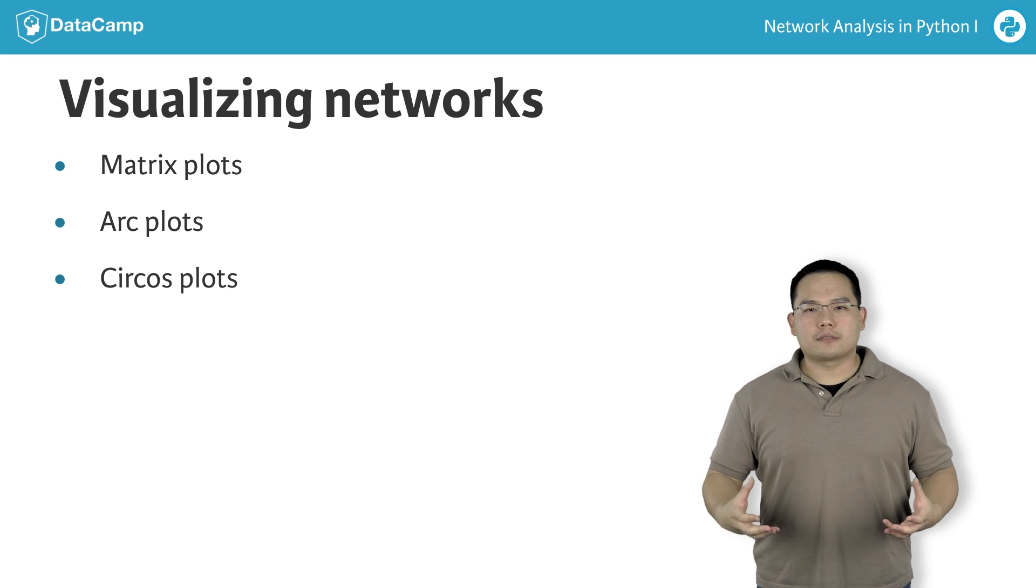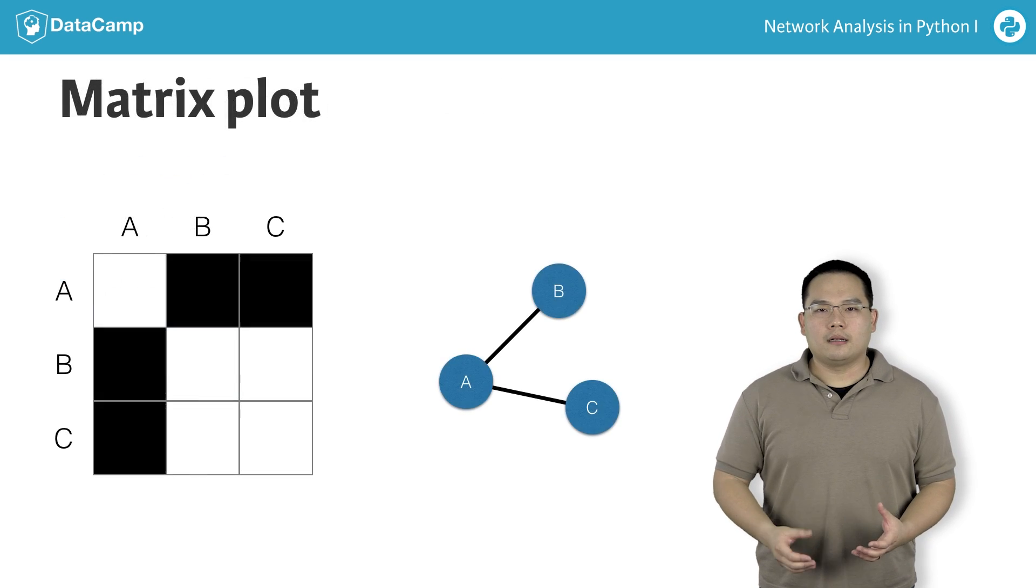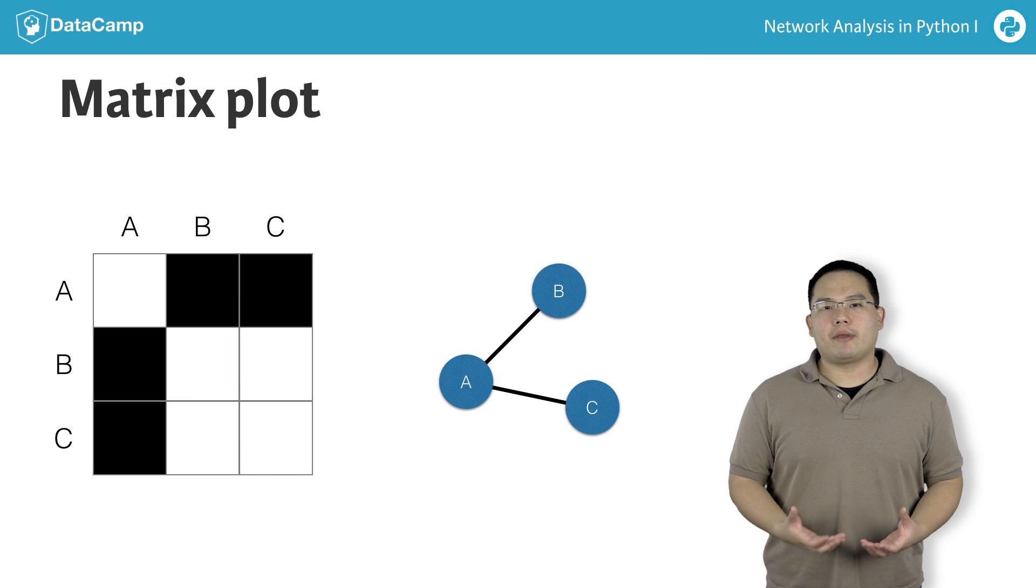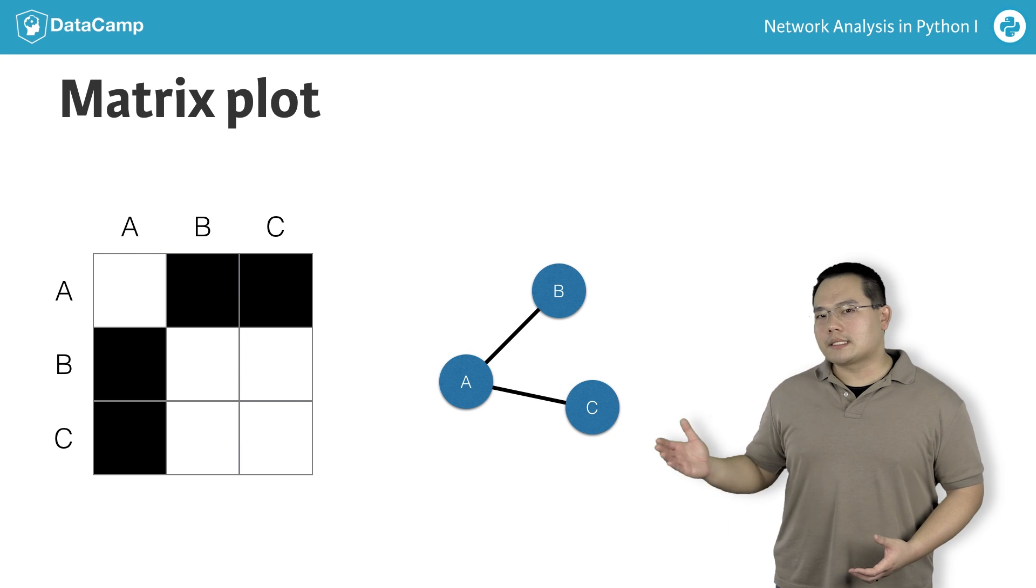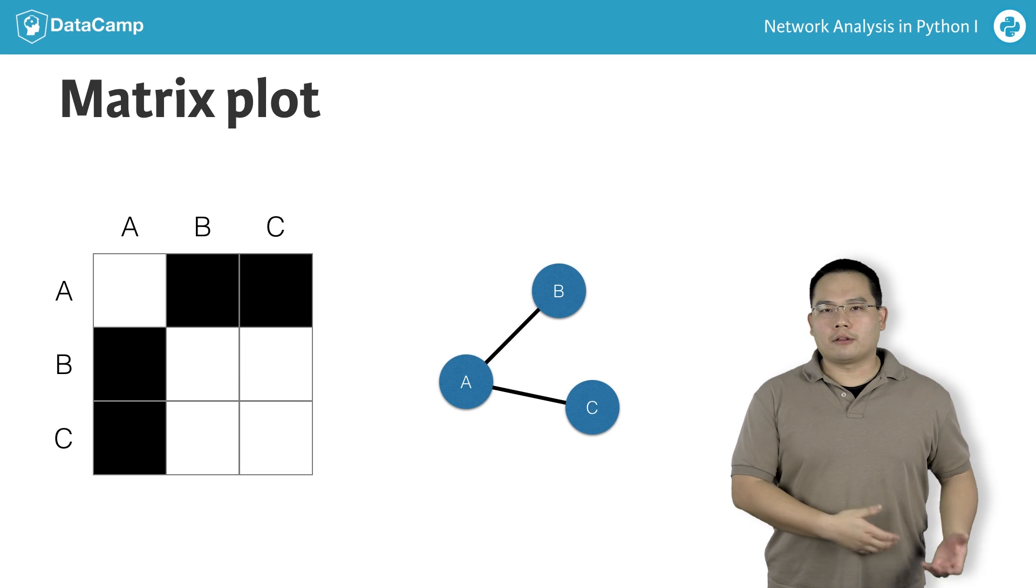Let's start first with a matrix plot. In a matrix plot, nodes are the rows and columns of a matrix, and cells are filled in according to whether an edge exists between the pairs of nodes. On these slides here, the left matrix is the matrix plot of the graph on the right.